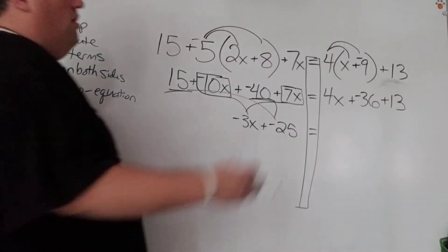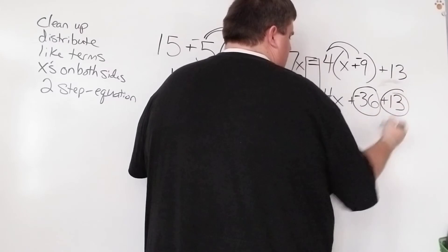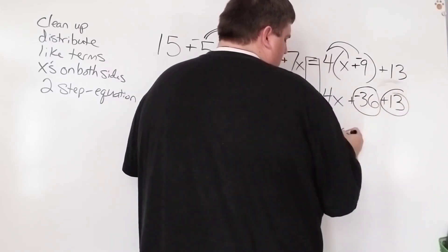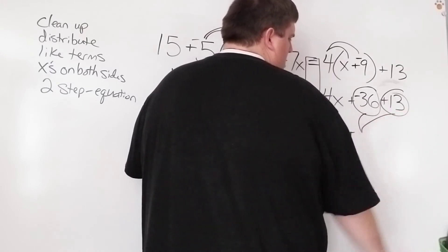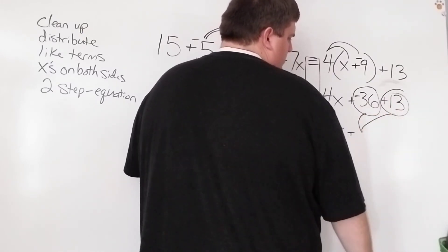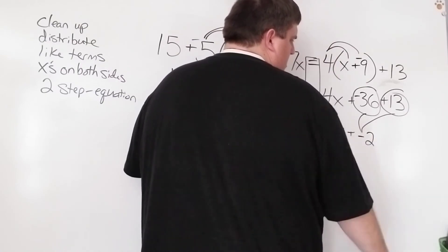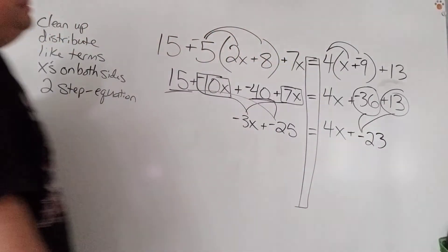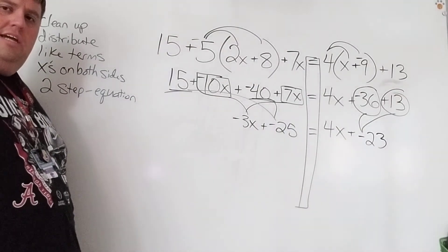That's the left side. Over here on the right side, I also have some like terms. Negative 36 and 13. The 4x doesn't go with anything, so I'm just going to drop it down. Negative 36 plus 13 is going to give me negative 23. Cool. That's what it looks like after I added like terms.